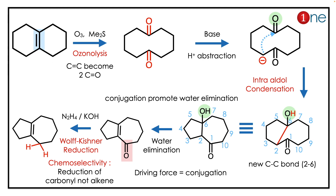There is an intramolecular aldol condensation — the anion attacks the carbonyl, giving ring contraction. So you have an alcohol and a ketone. There is a chance of alpha-beta elimination; the driving force is conjugation. So you have a conjugated enone.